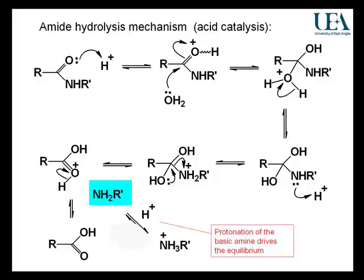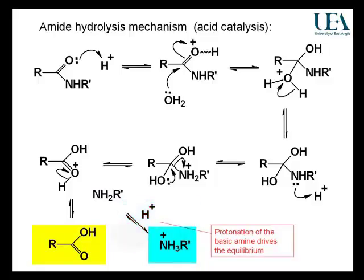However, the key difference between this and the examples in the ester series corresponds to the key difference between esters and amides — the nitrogen atom present in the amide. The key difference is this very last stage: in the presence of the acid conditions used, the amine that's produced will be protonated. If the acid conditions are strong enough, that protonation reaction will dominate, and you'll end up with the carboxylic acid in its associated form and the protonated form of the amine — the ammonium ion.